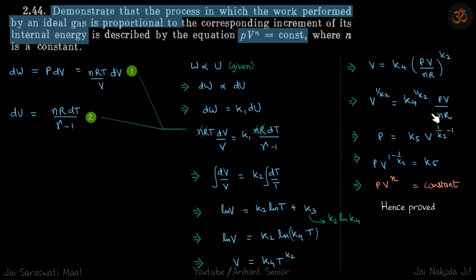And now this K4 to the power 1 by K2 and NR we'll put as another constant K5. So this gives P equals, V will go here, so that will be 1 by K2 minus 1.